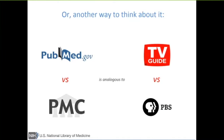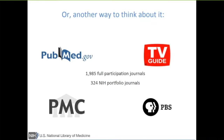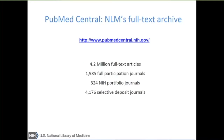PubMed Central has everything — all the figures and supplemental materials. If they mention a gene in one of our gene databases, we'll have a link directly to that gene sequence. References to other PubMed Central articles are automatically linked up as well. So it's a very nice, rich archived resource.